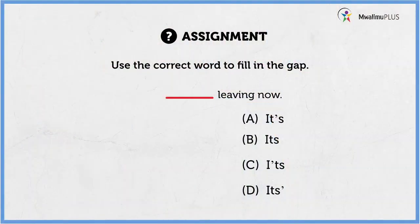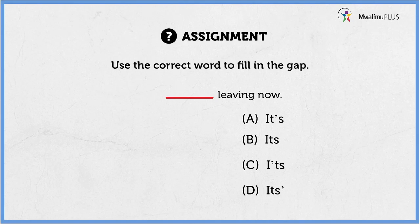After going through the lesson, I left you with an assignment. So let us go through it together so that you can check if you were able to get the correct answer. After looking at possession using the apostrophe, we also looked at how to form contracted forms of words using the apostrophe. Our assignment was dealing with short form using the apostrophe. The question was: use the correct word to fill in the gap. The sentence is dash living now.